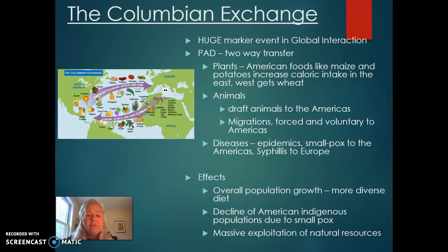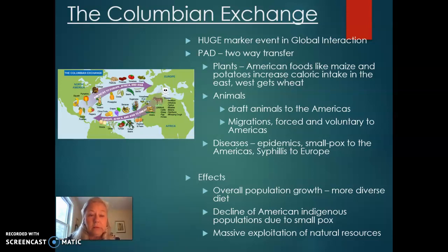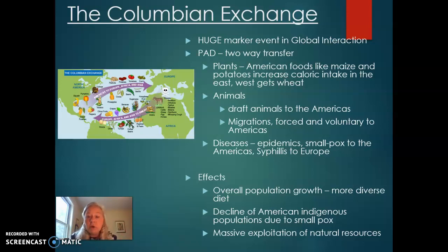Animals: draft animals like cows and horses came to the Americas for the first time. There had been some large animals, but they hadn't been domesticated — except perhaps llamas. There was also a huge migration of people — people are animals too — and much of it was forced. Some migration was voluntary to the Americas. We'll talk about the Atlantic slave trade in the next episode.